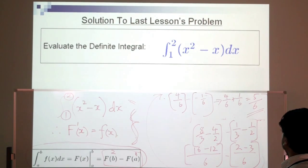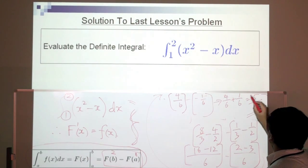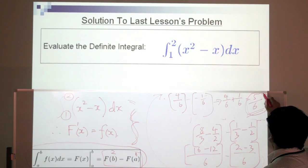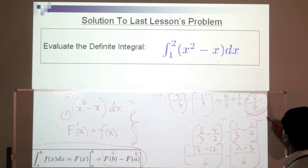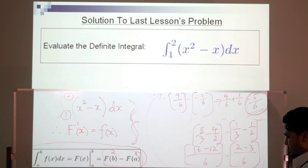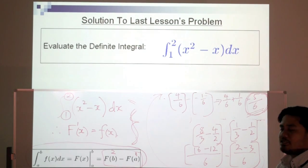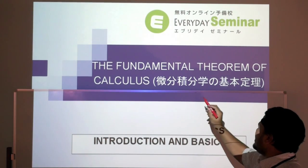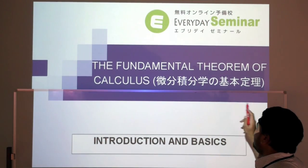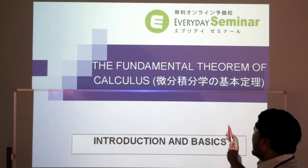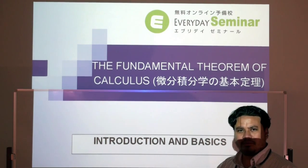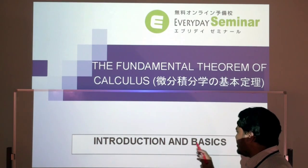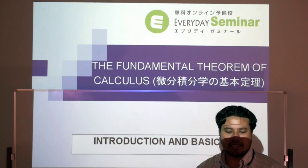That equals 5 over 6. This is a simple way to evaluate definite integrals by finding anti-derivatives. Now let's move on to today's topic: the fundamental theorem of calculus.